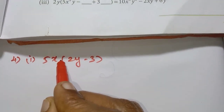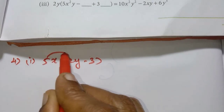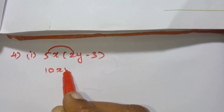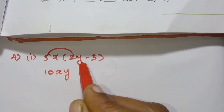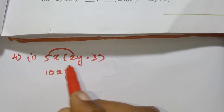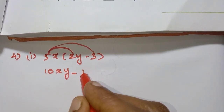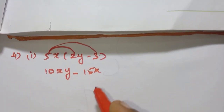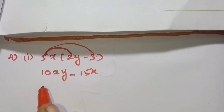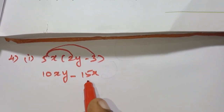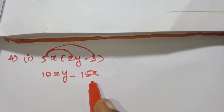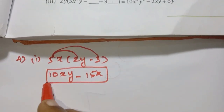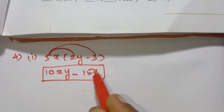Now look at this multiplication symbol. 5 into 2 is 10, giving us xy. Then minus into plus is minus. 5 into 3 is 15, giving 15x. So the answer is 10xy minus 15x.